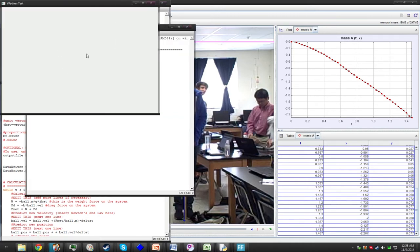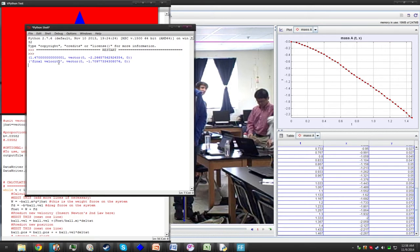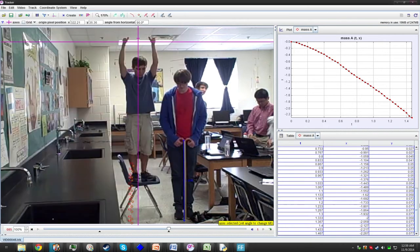Here is the program running. There is a drag. There is the mass times gravity. Here is the final velocity, and here is the final position: 2.266. And just like in Tracker, the real-world motion: 2.266, 2.267.